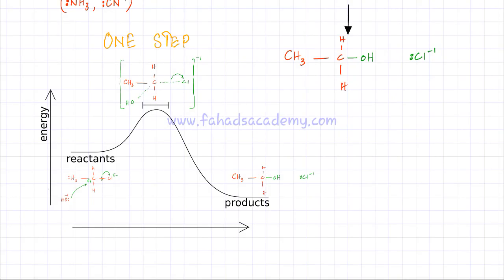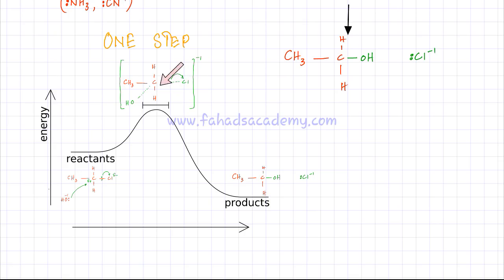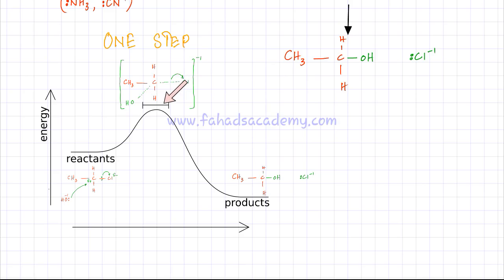I'm now going to relate the same mechanism and show it on an energy or reaction pathway diagram. Here are my reactants: a primary halogonoalkane and the OH nucleophile. This is the transition state — the activated complex — where the OH approaches the positive carbon while the electrons of Cl get repelled. Then your products are formed as Cl breaks away, and I've drawn the same reaction on a reaction pathway diagram.